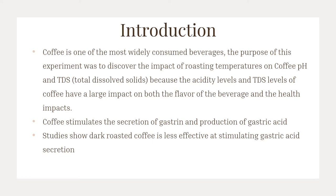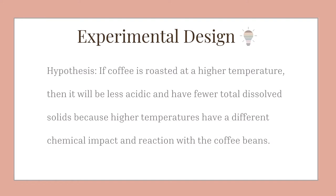Coffee stimulates the secretion of gastrin, which produces gastric acid. Studies show that dark roasted coffee is less effective at stimulating gastric acid. This brings me to my hypothesis: if coffee is roasted at a higher temperature, then it will be less acidic and have fewer total dissolved solids, because higher temperatures have a different chemical impact and reaction with the coffee beans.